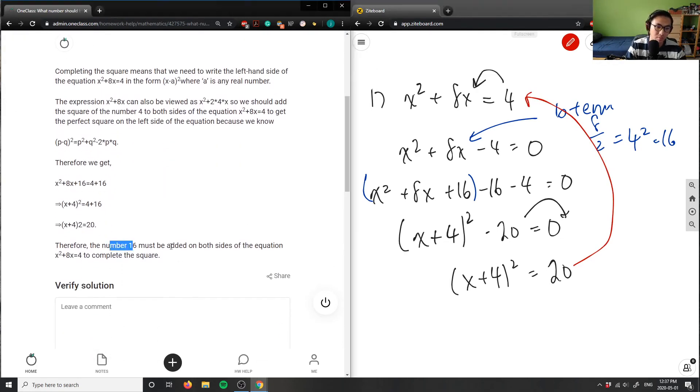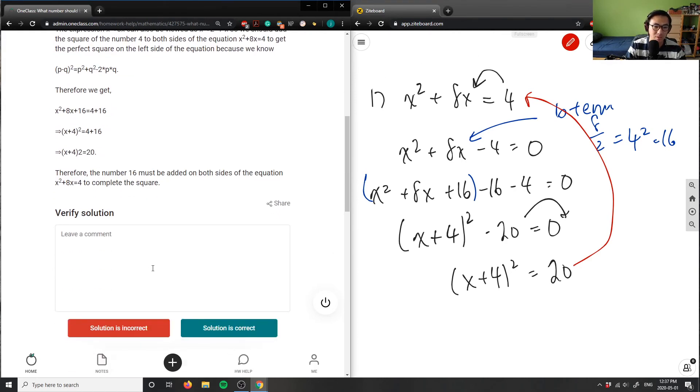So this solution is correct. The number 16 must be added to both sides to complete the square. They got the exact same solution I did. The solution is correct, good explanation.